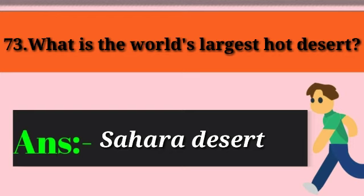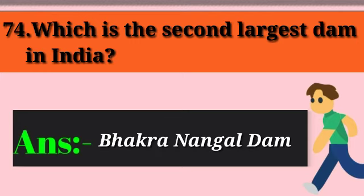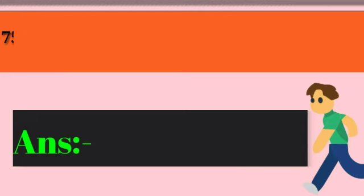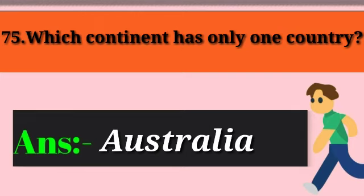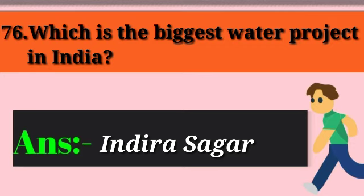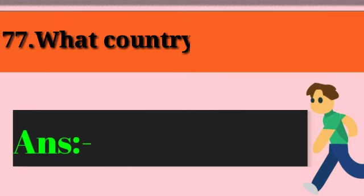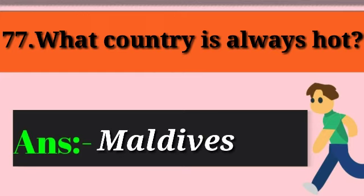Question 74: Which is the second largest dam in India? Answer: Bhakra Nangal Dam. Question 75: Which continent has only one country? Answer: Australia. Question 76: Which is the biggest water project in India? Answer: Indira Sagar. Question 77: What country is always hot? Answer: Maldives.